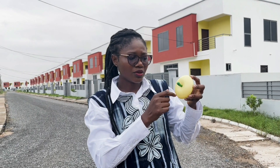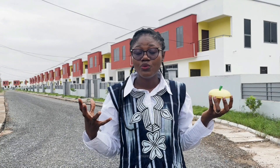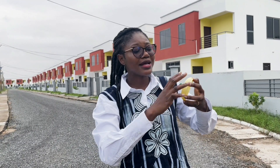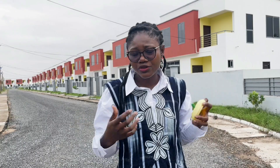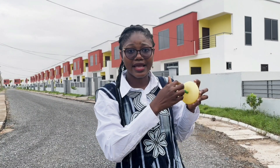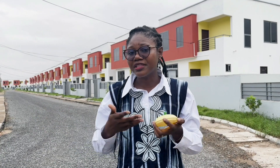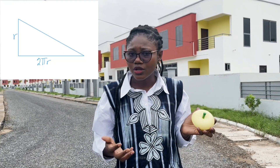Now let's move on to the area of the circle. We established that the circumference of a circle is 2πr. Imagine that we dismantle the circle into a triangle, like the video you are seeing. You realize that finding the area of the circle is the same as finding the area of that triangle.